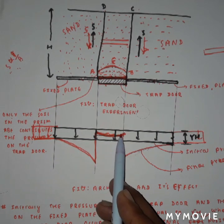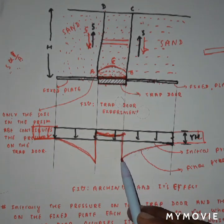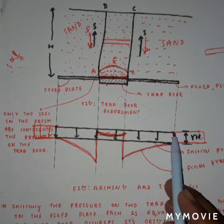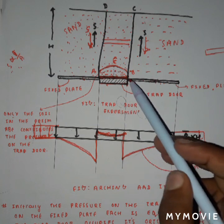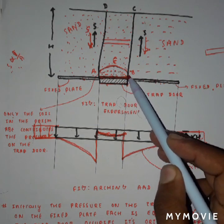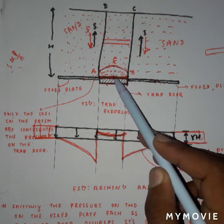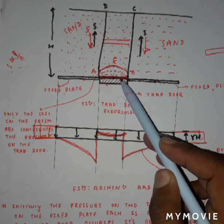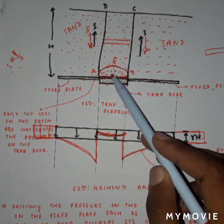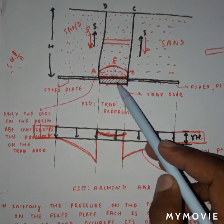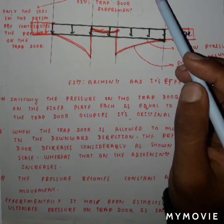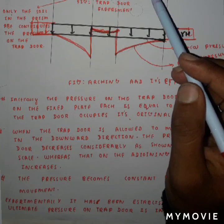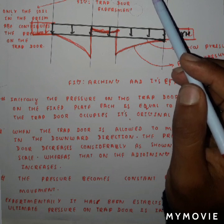This is the final pressure curve as obtained experimentally by Terzaghi. The pressure becomes constant after a small movement, and further movement does not affect the pressure in the trapdoor experiment, because only the falling mass of the soil prism below AEB contributes to the pressure. This concludes the Terzaghi trapdoor experiment.